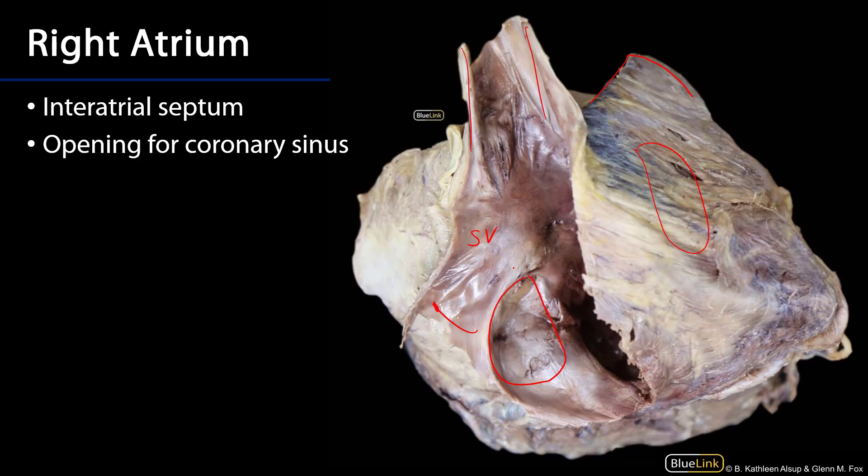If that space persists post-birth, it's referred to as a patent foramen ovale, or PFO, which we'll see in a subsequent video. We can also see a ridge with a flap that is a valve for the coronary sinus, and just adjacent to that is the opening for the coronary sinus — the main conduit for the return of blood from the myocardium into the right atrium.